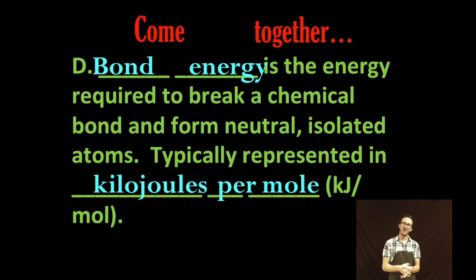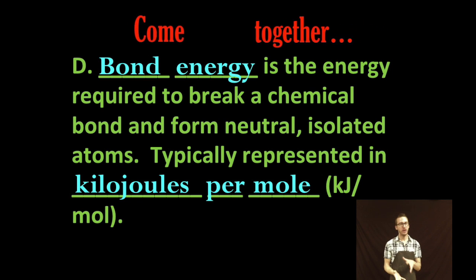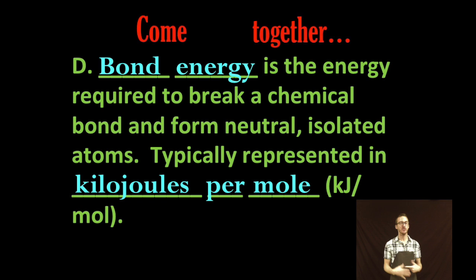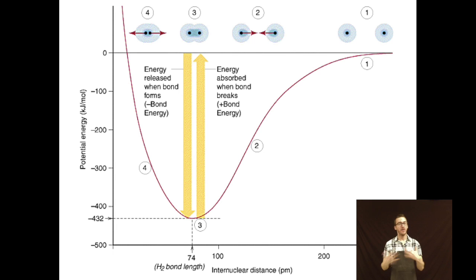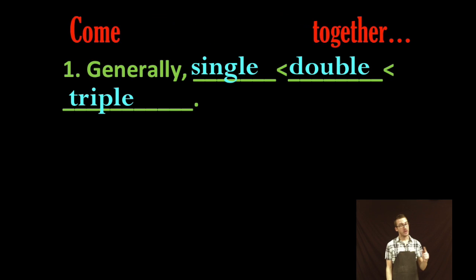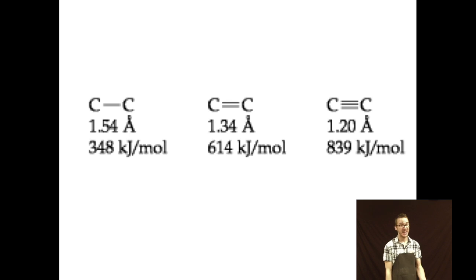Okay, and the final property to think about is bond energy. And you can really think about bond energy of two ways, but typically it's represented in kilojoules per mole. Now you can think about that bond energy as either the energy absorbed when a bond breaks, or the energy released when a bond forms. And again, you're thinking about your two separate atoms coming together to form your bonded atoms. It's going to take less energy to break a single bond than it would a double bond, and less energy to break a double bond than a triple.